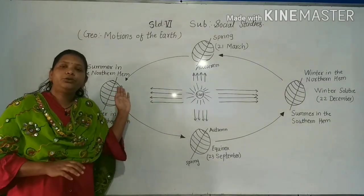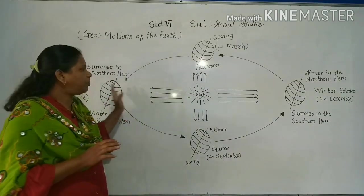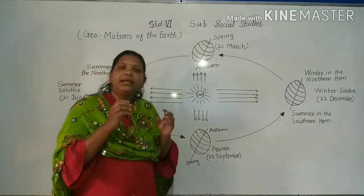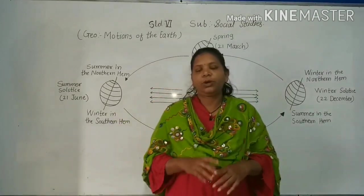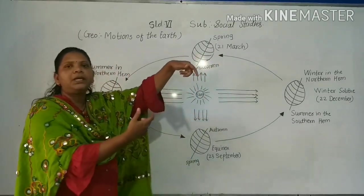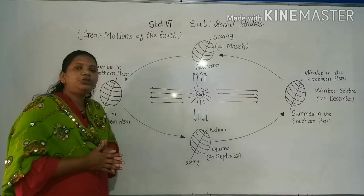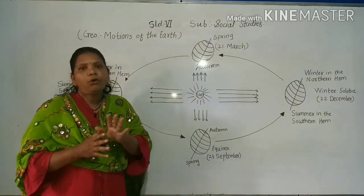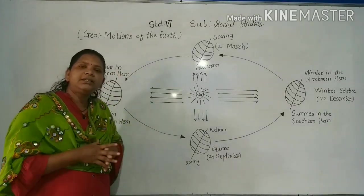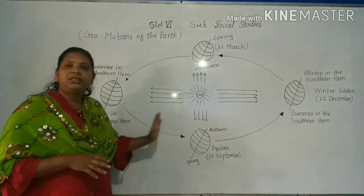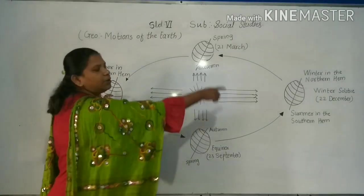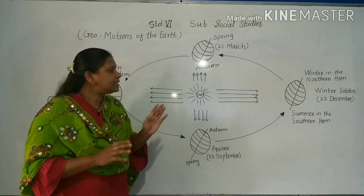Notice that throughout its orbit, throughout this earth's orbit, the earth is inclined in the same direction. If it is tilted in a certain manner, it rotates around in the same manner. So the year is usually divided into four seasons: summer, winter, spring, and autumn. Seasons change due to the changes in the position of the earth around the sun. We will see that in detail.